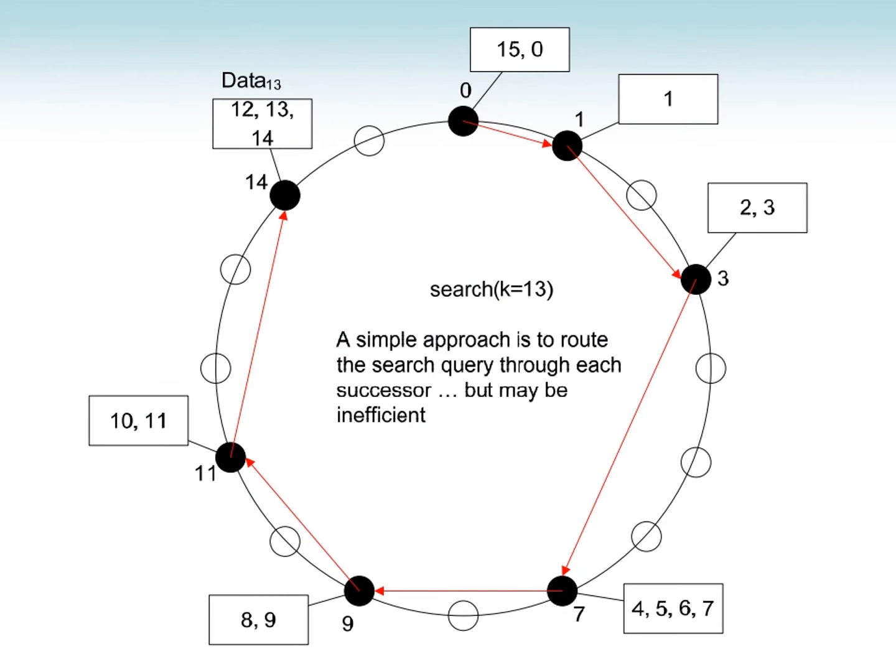Now consider the searching case. Here we are searching for key value 13 — searching the data which holds key value 13. Searching sequentially: 0 to 1, 1 to 3, 3 to 7, 7 to 9, 9 to 11. But 13 is not present at 11; 13's value is present in node 14. So we have to reach 14 and retrieve the data. But this is sequential search, which is not efficient.